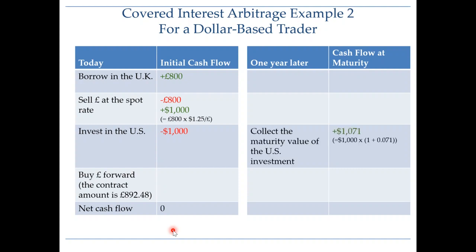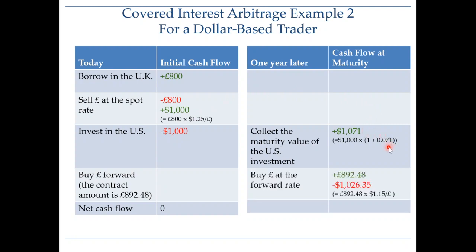A year goes by. First, you collect the maturity value of your US investment. Those $1,000 invested in the US are now $1,071 because the US interest rate is 7.1%. Then you take your dollars and use them to buy pounds as previously agreed. You don't need to convert all $1,071 — you just need enough to pay off your loan. To pay off the loan amount of 892.48 pounds, you need $1,026.35, calculated at the agreed-upon forward rate of $1.15.